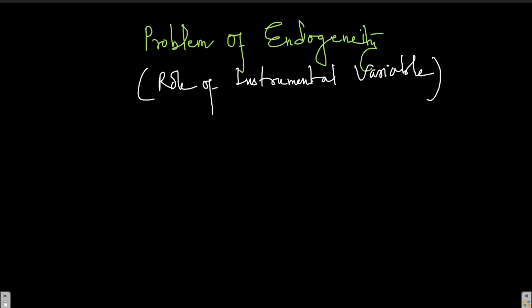Hello and welcome back to the lecture on Applied Econometrics. We have been talking about instrumental variables and in this lecture we are going to talk about a particular type of problem that we often come across in quantitative economics research — the problem of endogeneity. Whenever we see a condition where the covariance of x_i and u_i is not equal to zero, we say there is a problem of endogeneity.